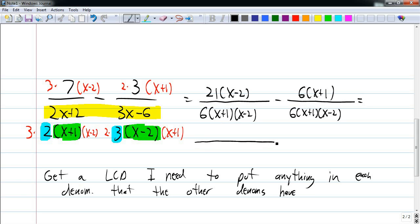Now, because space is tight here, I'm going to combine a couple of steps. I'm going to distribute this 21, 21x minus 42, minus, and I'm going to distribute this 6, 6x plus 6.